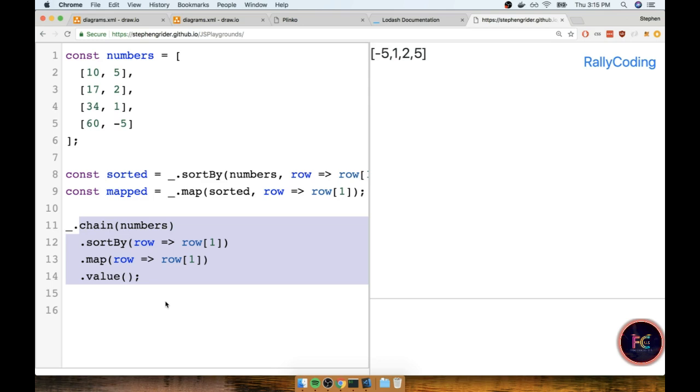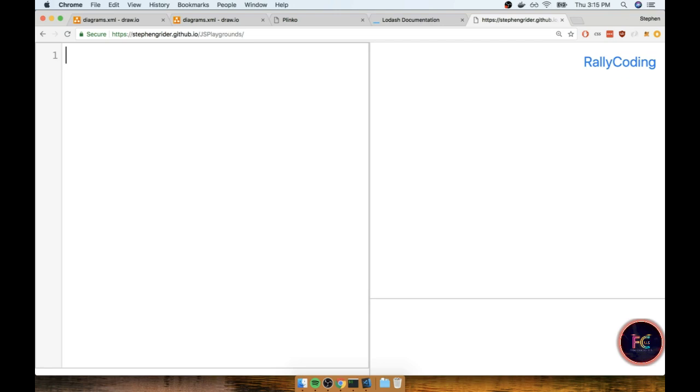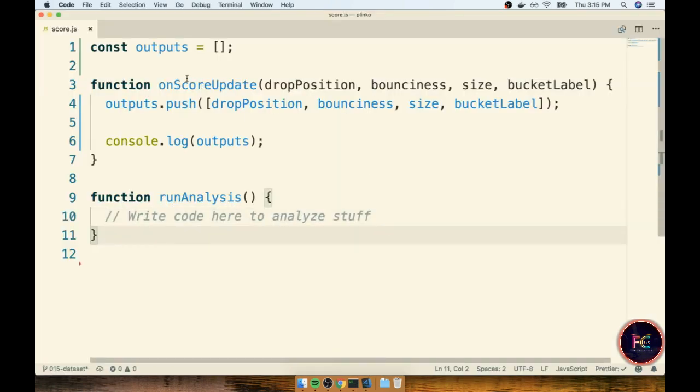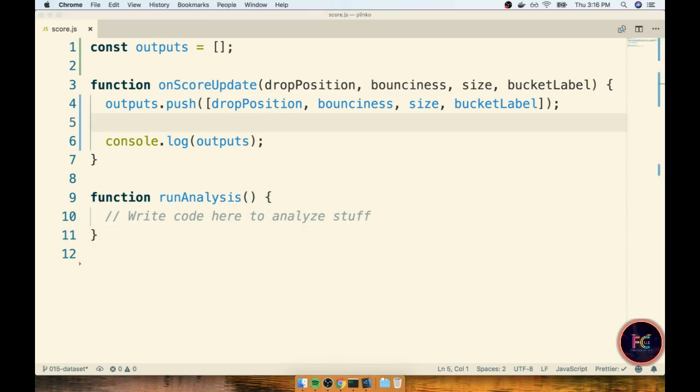So with that in mind, let's now delete all this code and we're going to write out our k-nearest neighbor algorithm directly inside this editor so we can see some quick output. As soon as we finish this initial implementation, we're then going to move it over to our code editor for the actual Plinko project.